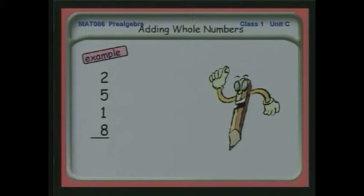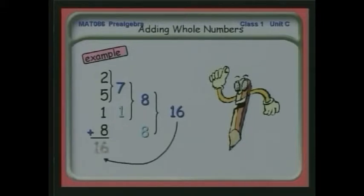Let's look at an example of that. Let's add this column up. I take the first two numbers: 2 plus 5 gets 7. Then take the 1, add the 7 and 1 to get 8. Then I take the 8 to get 16, which is the answer or the sum of the numbers in that column.